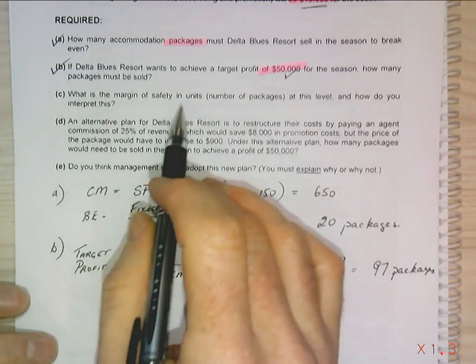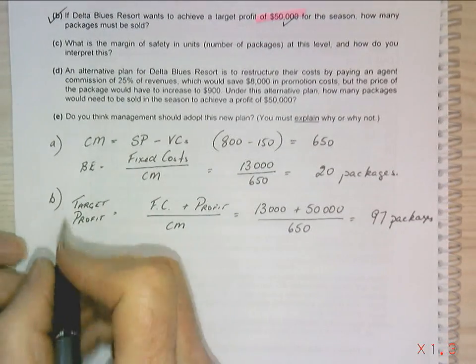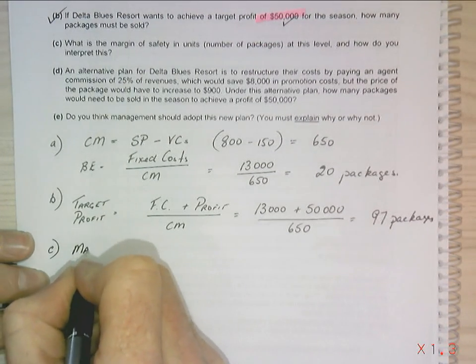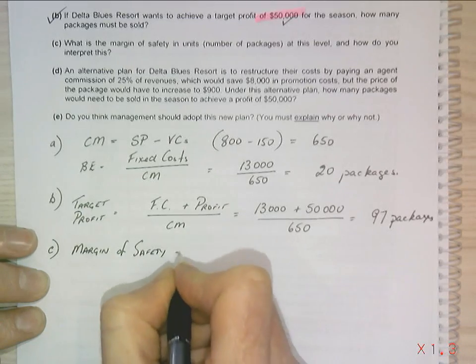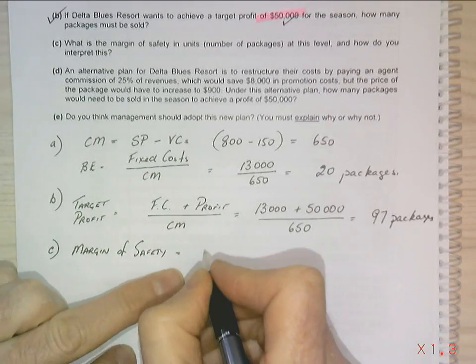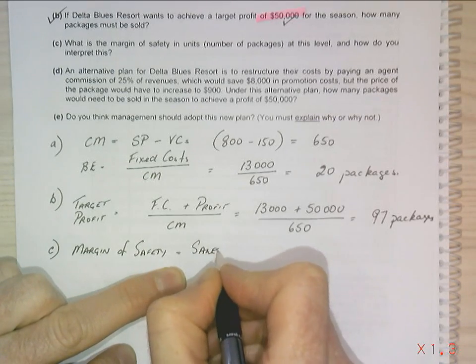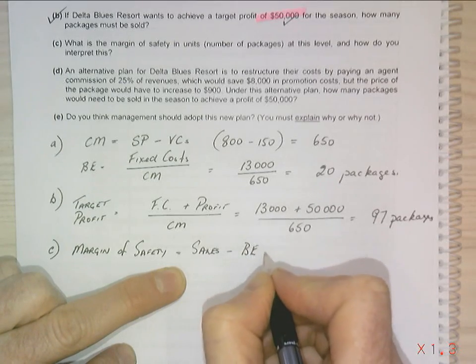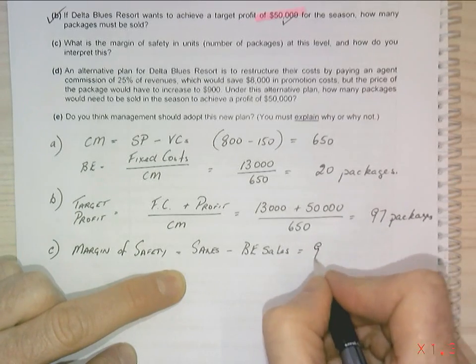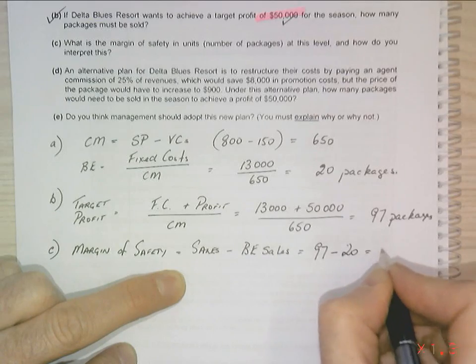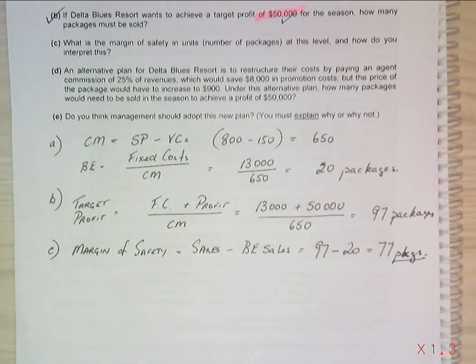Now what is the margin of safety in units, number of packages at this level, and how do you interpret this? Okay, so C: my margin of safety equals my sales minus my break even sales in units. So this equals 97 minus 20, which equals 77 packages.